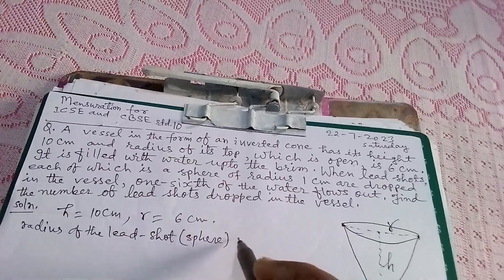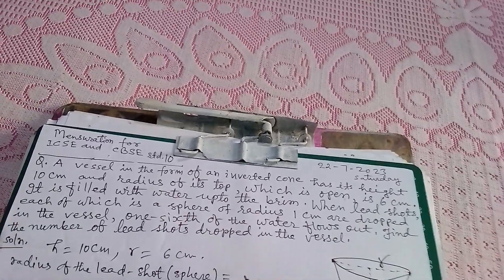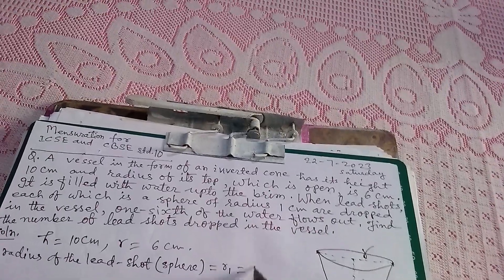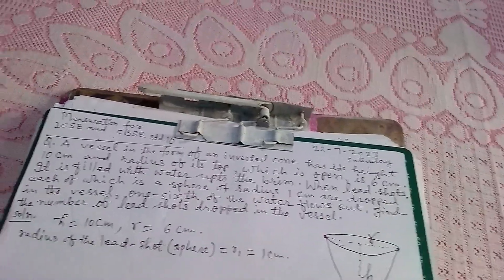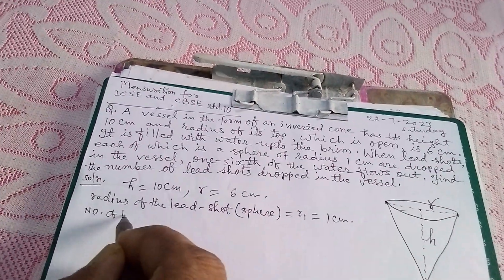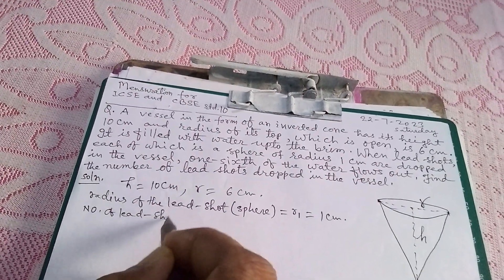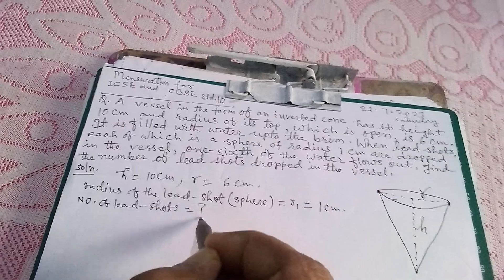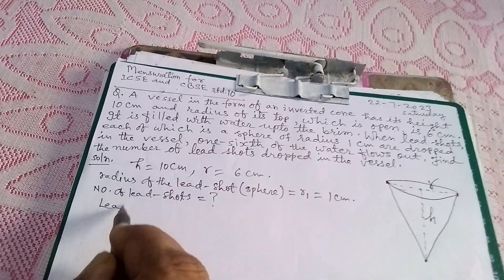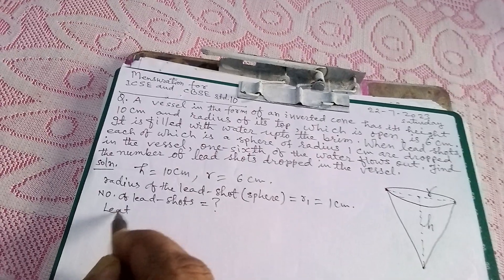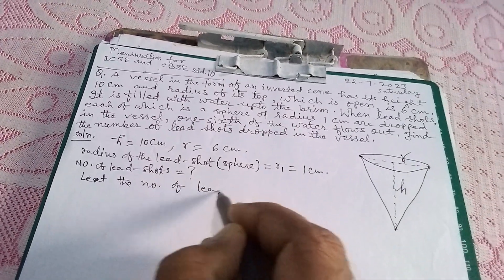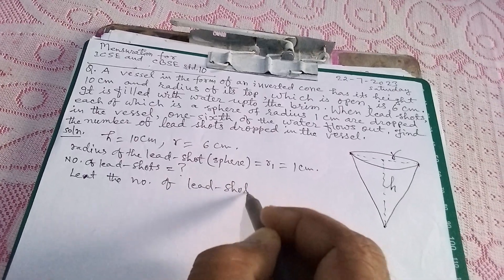And then we have to find number of lead shots equals to what. First of all, we are supposing let the number of lead shots that is spherical is equal to anything.